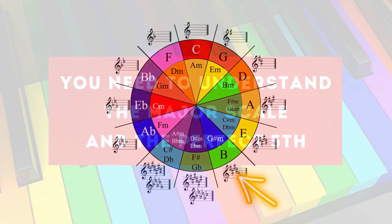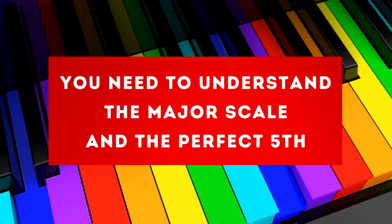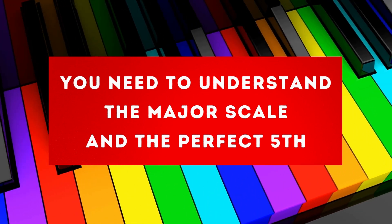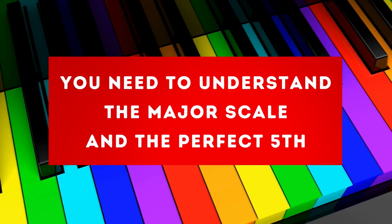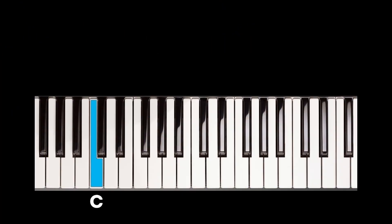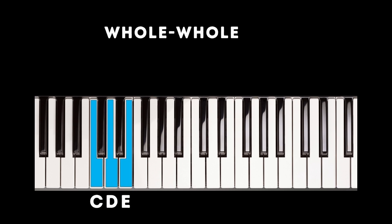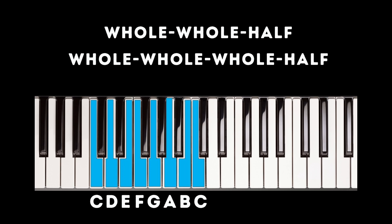In order to use the circle of fifths, you need to first understand two things: the major scale and the interval of a perfect fifth. Any major scale starts on a single note and ascends with the following intervals: whole step, whole step, half step, whole step, whole step, half step.